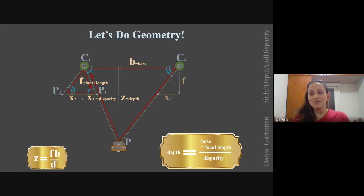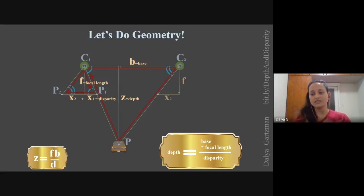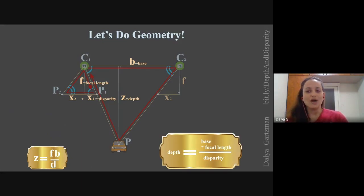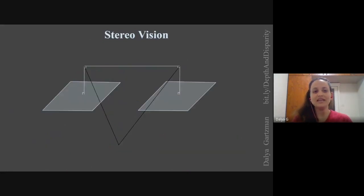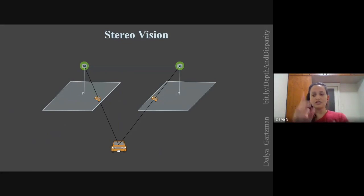Since f and b are constants — the focal length and the baseline — we see a linear inverse relationship between depth and disparity. Knowing the disparity in stereo vision, we can calculate the depth of all objects in the mutual view of the cameras. Now let's remove the earlier assumption that objects are at the exact height of the camera centers, and allow objects to be anywhere — higher or lower.